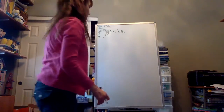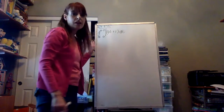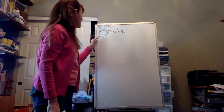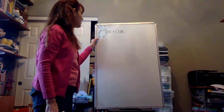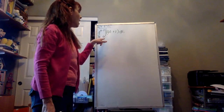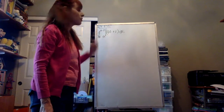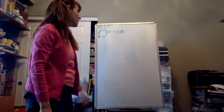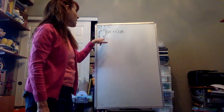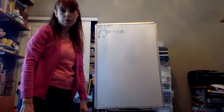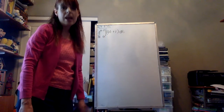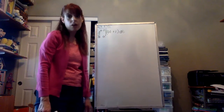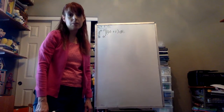Here's the problem we're going to work on: take the derivative of the integral from a to x+2 of (4t + 1) dt. Here, a is some constant — it doesn't matter what constant, it's just some constant.